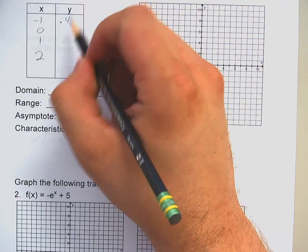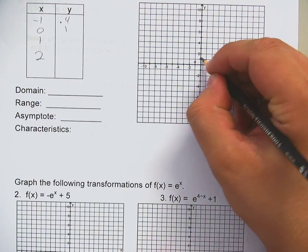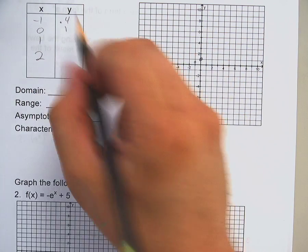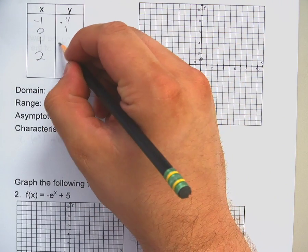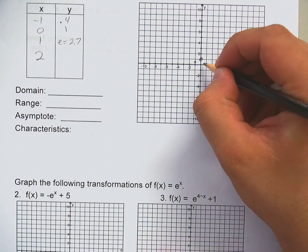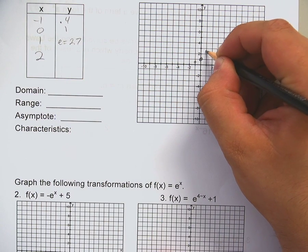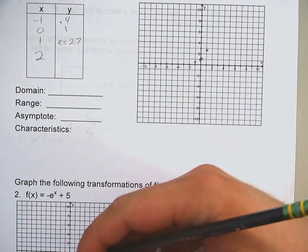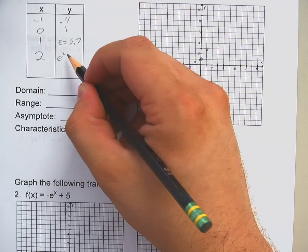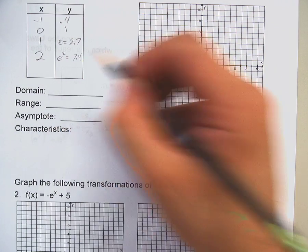Plug in a zero, E to the zero is one. Anything to the zero is one. Plug in a one, you get E, which is 2.71828. Right here. Plug in a two, you get E squared, which is 7.4.